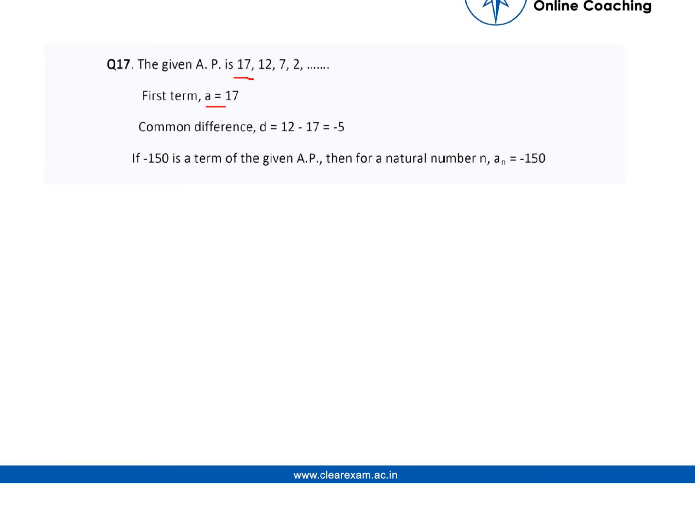In order to determine the common difference, we will be subtracting the second term and the first term, that is 12 minus 17. So the common difference is minus 5.